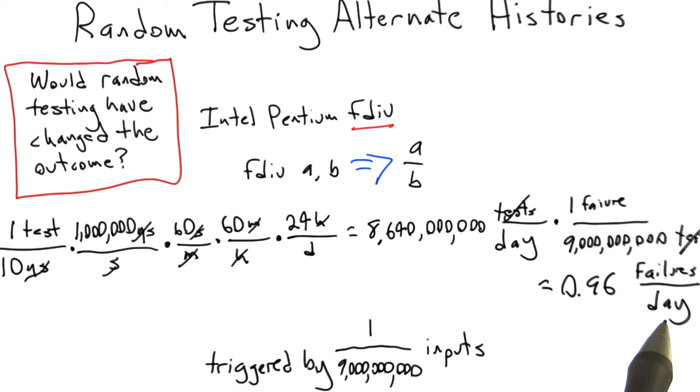So under what I think are fairly modest assumptions here, if we perform completely random testing of the input space for fdiv, we should be able to find this bug in about a day.